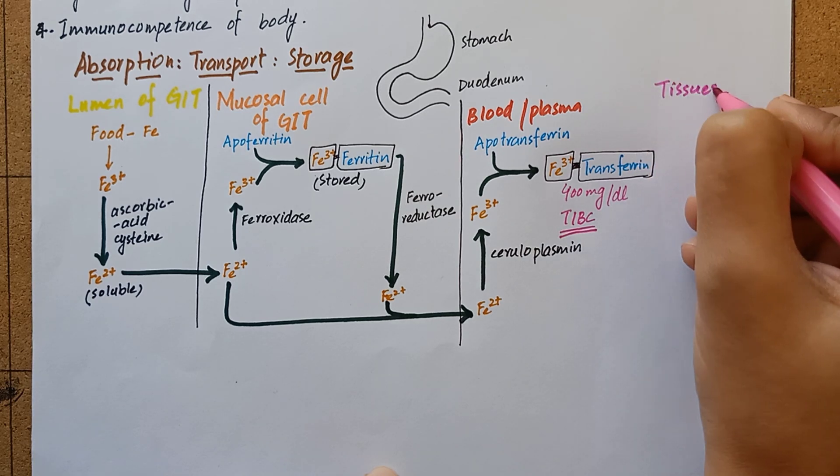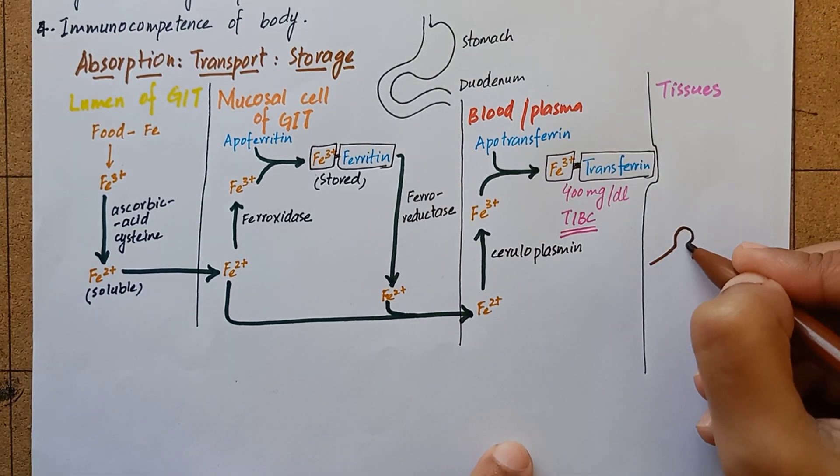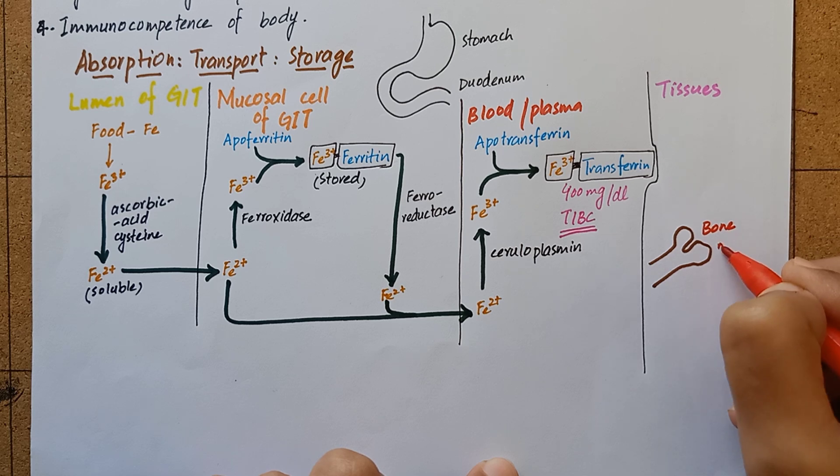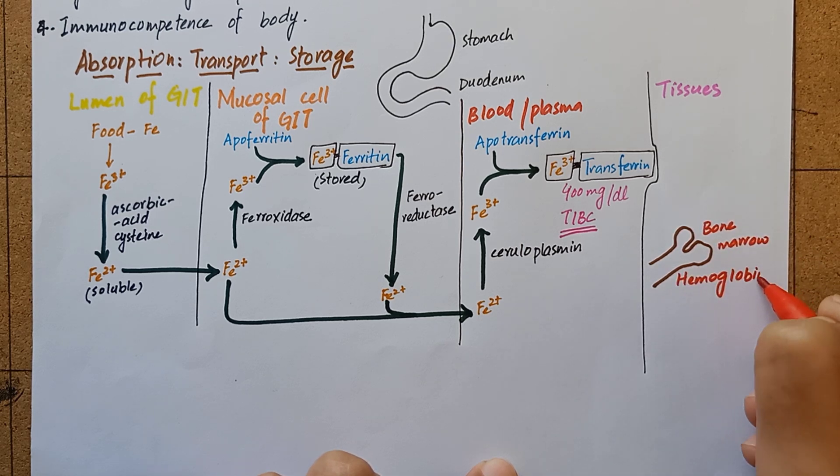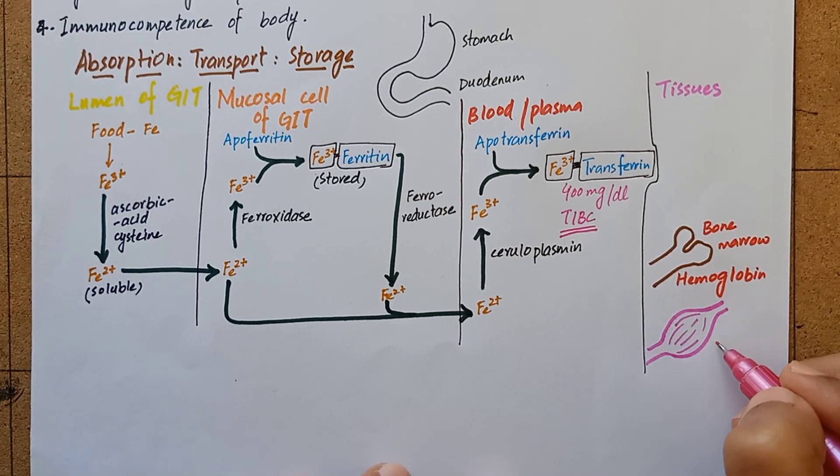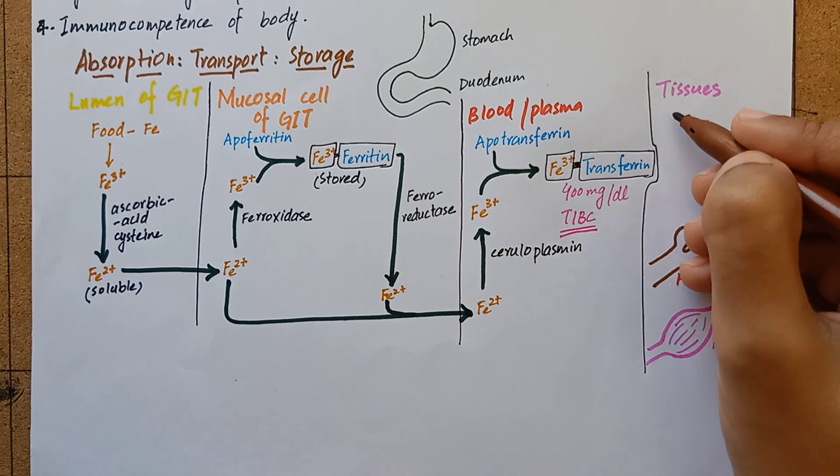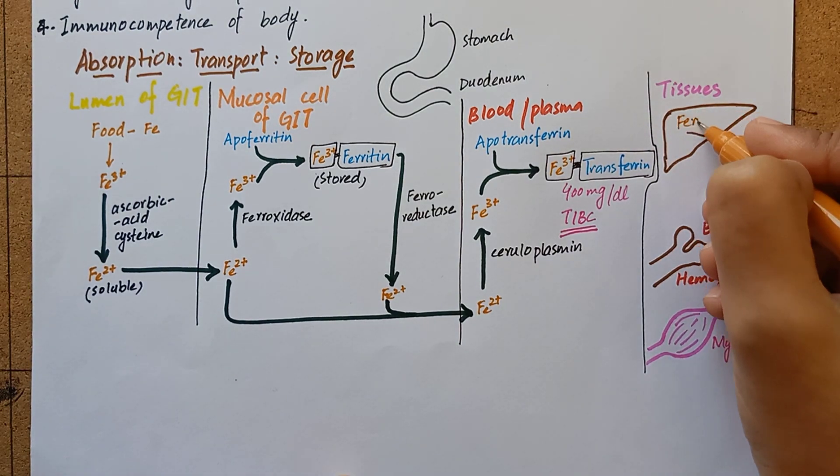Transferrin transfers iron to different tissues for utilization and storage. For example, in bone marrow to make hemoglobin, in muscles to make myoglobin, in liver for storage as ferritin.